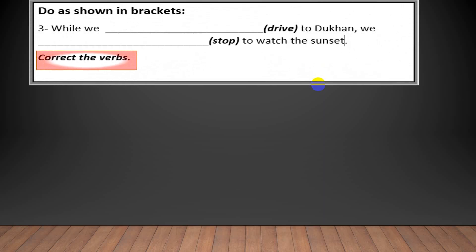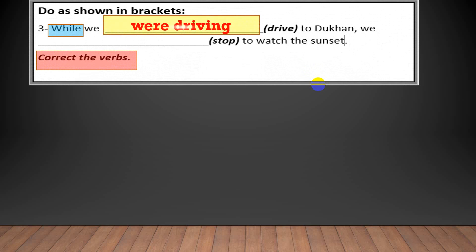We are practicing: while we were driving to Dukan, we stopped towards the sunset. We were driving — that's the continuous action going on the whole time. Then suddenly something happened and cut the continuation, so we stopped. The continuous verb was 'were driving', and the sudden action was 'stopped'.